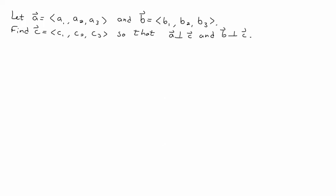Let vector A have components A1, A2, A3, and vector B have components B1, B2, B3. We want to find some vector C with components C1, C2, C3, so that vector A is perpendicular to C and vector B is perpendicular to C. This C vector is our cross product vector.